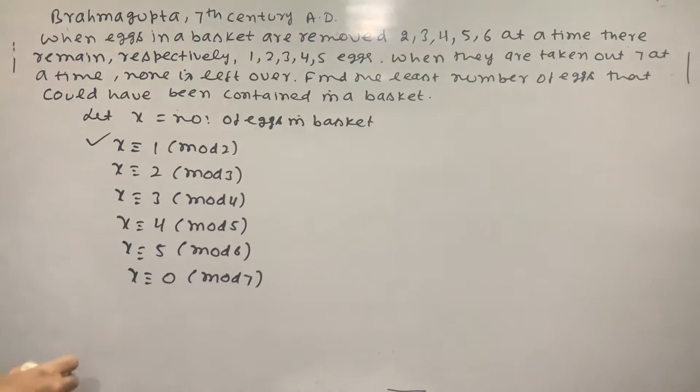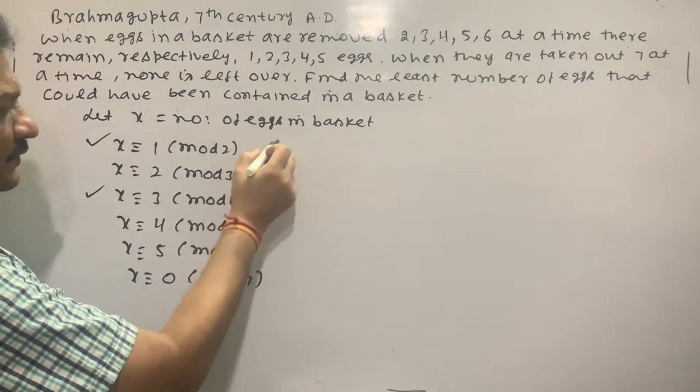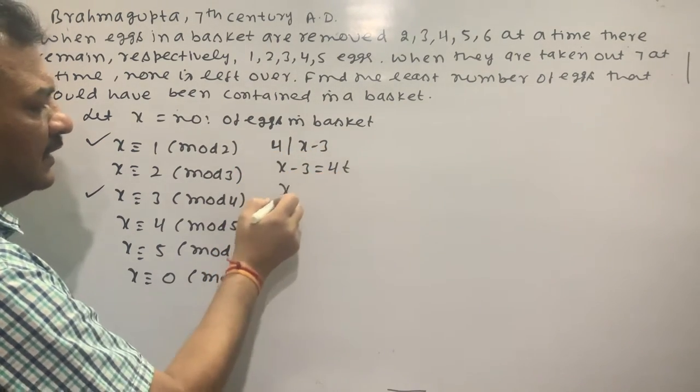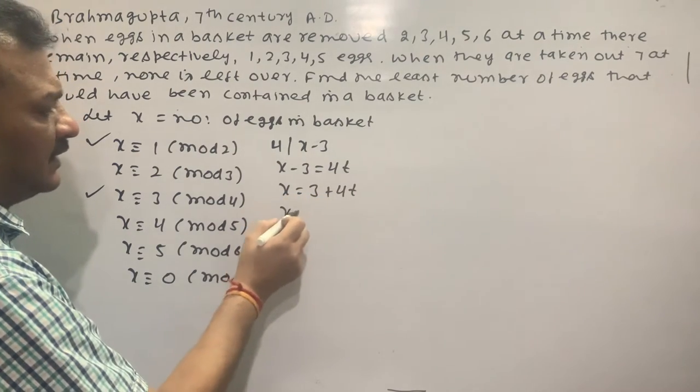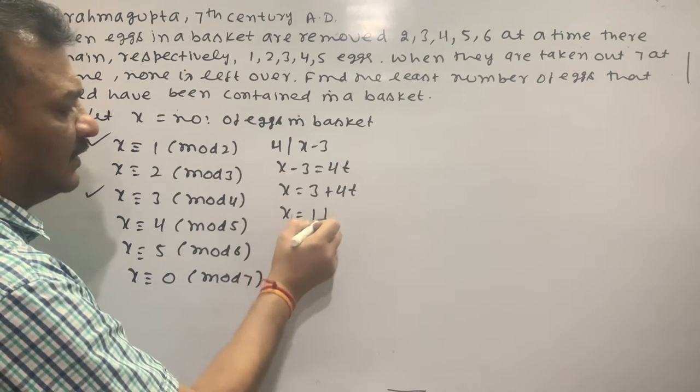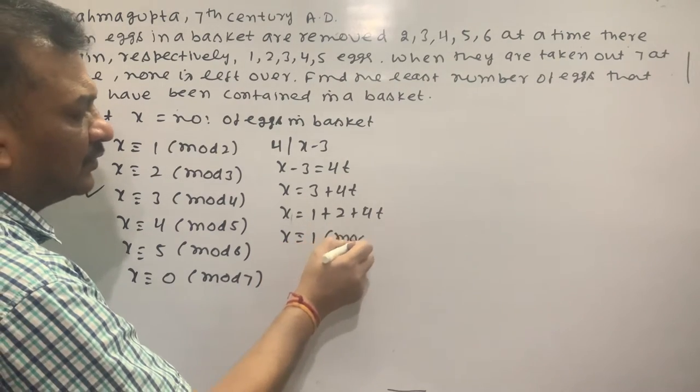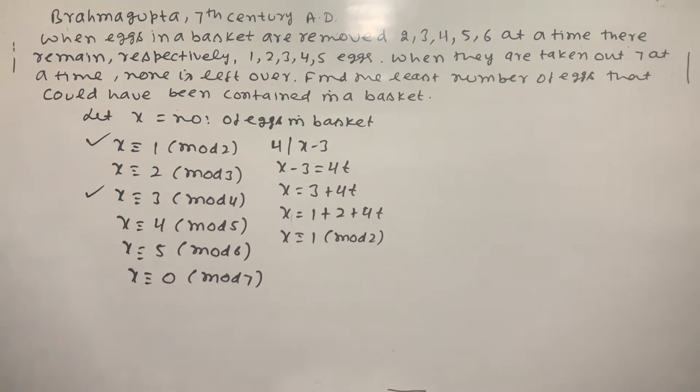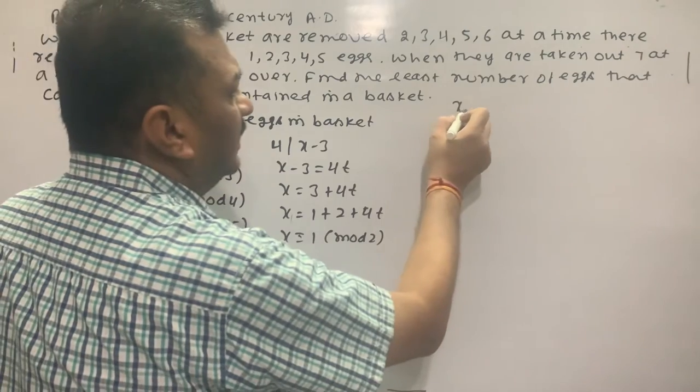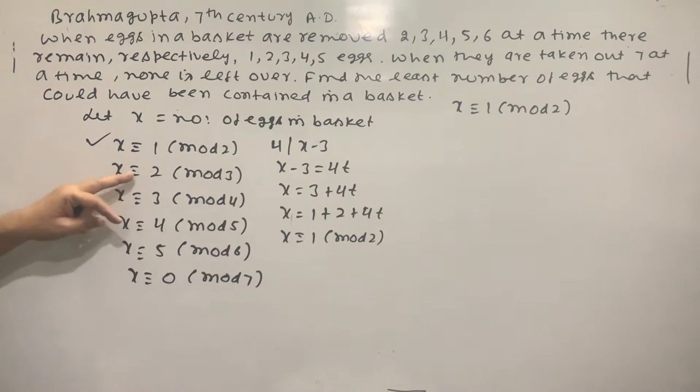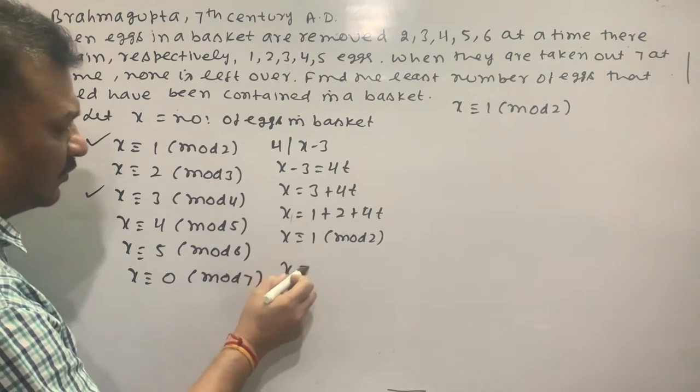From this, x-4 divides x-3. x-3 equals 4k, so x equals 3 plus 4k. We write x ≡ 1 (mod 2) and x ≡ 3 (mod 4), which is equivalent to x ≡ 1 (mod 2).